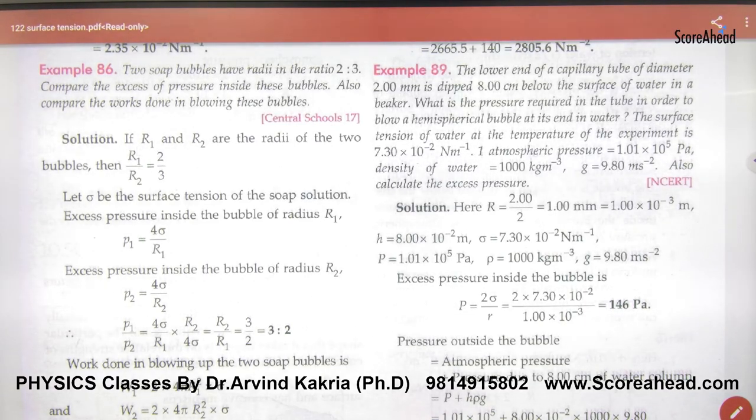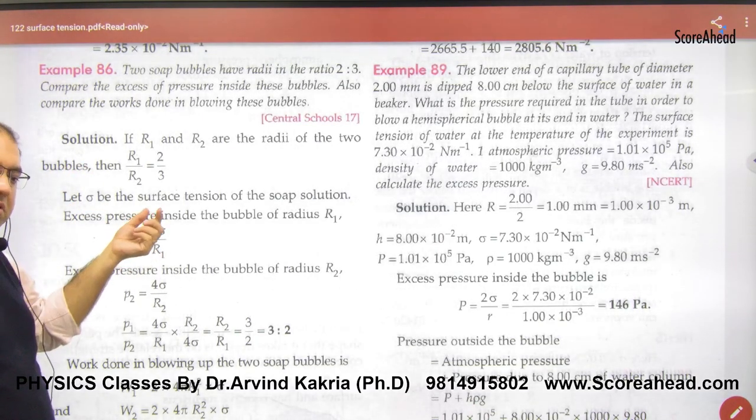Two soap bubbles having radii in the ratio of 2 is to 3, so radius of the ratio given is R1, R2, compare the excess pressure inside these bubbles. Take the excess pressure ratio. So it's easy, in the excess pressure bubble there is 4σ/R1...